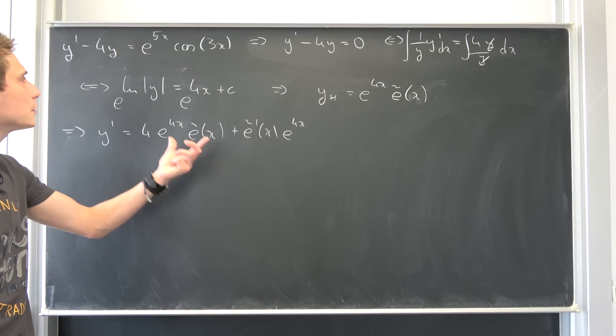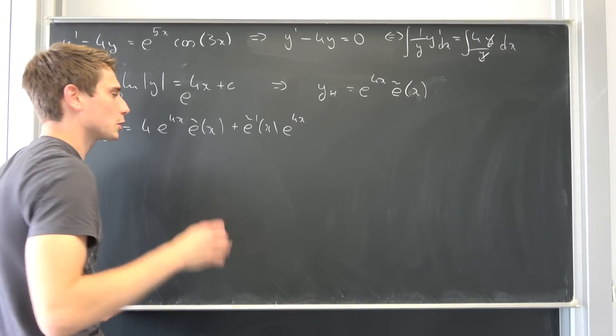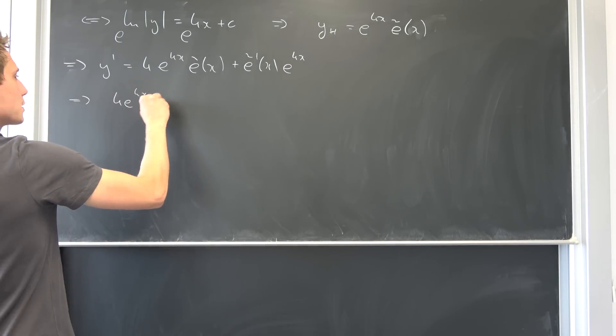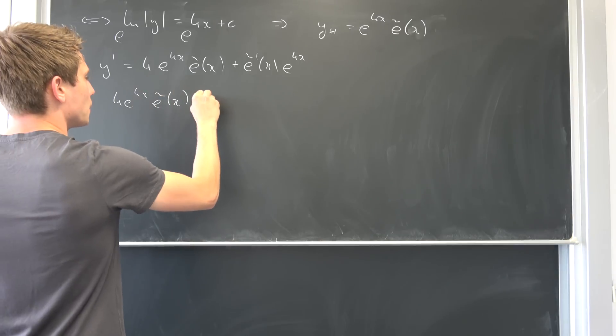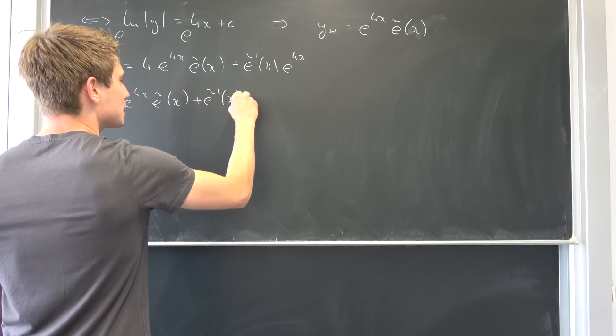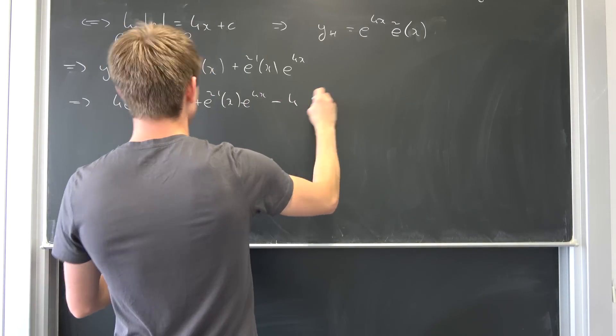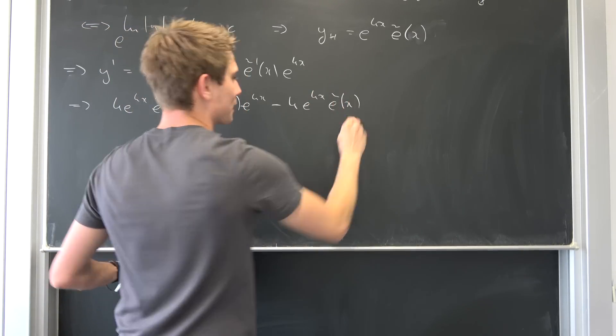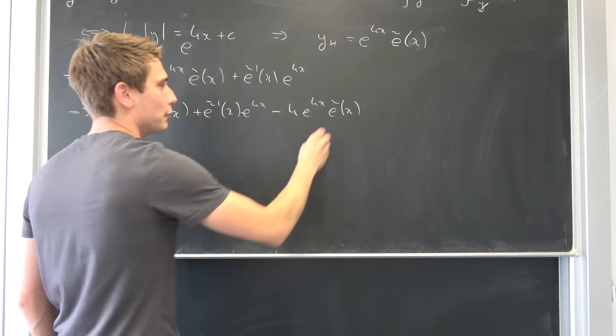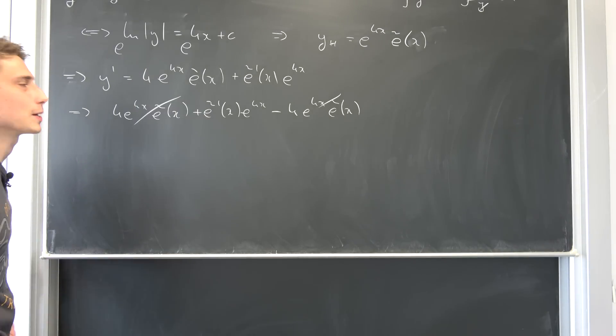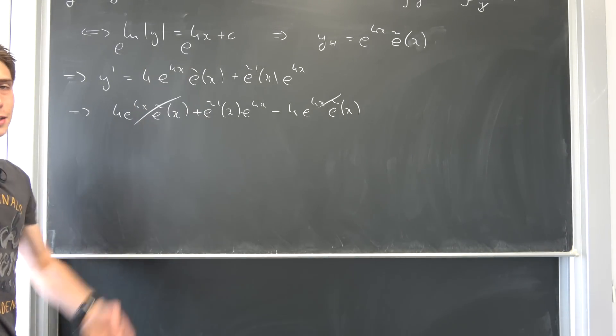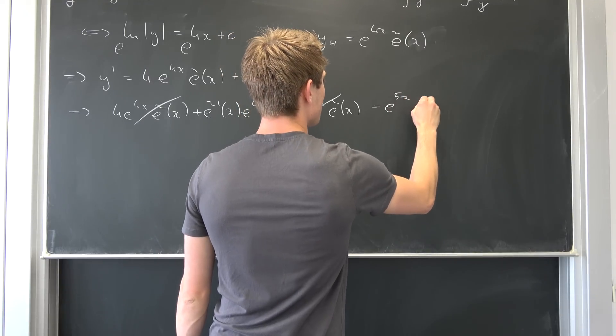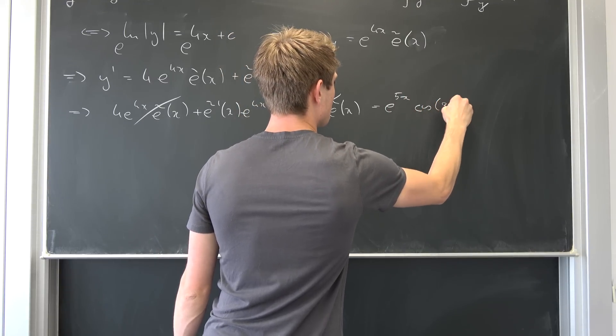And just like I said we want to plug this thing into here and see what we get at first. So that also means we have 4 times e to the 4x e-schlange of x plus e-schlange prime of x e to the 4x minus 4 times e to the 4x e-schlange of x. And the cool thing is this is going to happen every time this and that is going to cancel out. So that's quite cool. That was the point of doing this solving of the homogeneous case. It's equal to e to the 5x cosine of 3 times x.